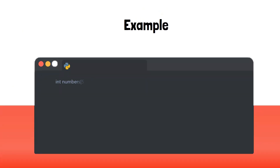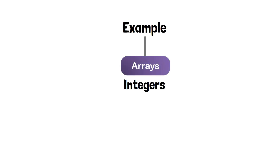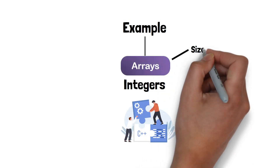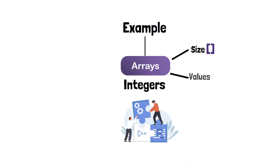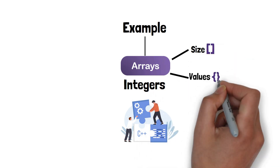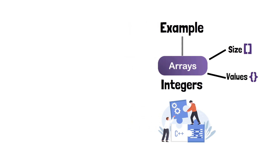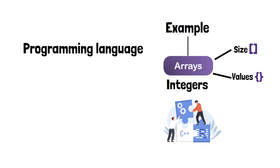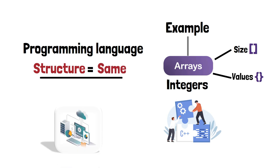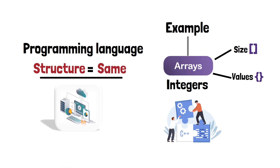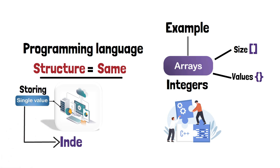In other programming languages, you might see arrays declared like this. This is an example of declaring an array of integers in C. The size of the array is specified in square brackets, and the values are initialized within curly brackets. Regardless of the programming language, the basic structure of an array is always the same — it consists of a contiguous block of memory, with each memory location storing a single value. The values can be accessed using an index, and the index starts from zero.